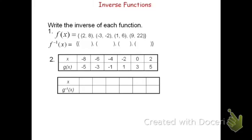So (2, 8) becomes, switched, (8, 2). Now the same pattern will follow for the other three. The next one becomes (-2, -3), then (6, 1), and then (22, 9).